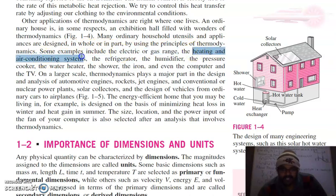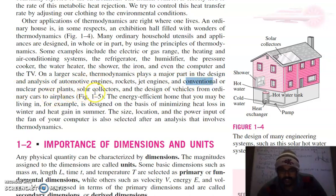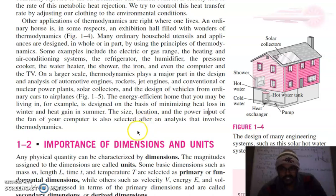Household examples include electric or gas ranges, heating and air conditioning systems, refrigerators, humidifiers, pressure cookers, water heaters, showers, irons, and even computers and TVs. On a larger scale, thermodynamics plays a major part in the design and analysis of automotive engines, rockets, jet engines, and conventional or nuclear power plants. Energy-efficient homes are designed on the basis of minimizing heat loss in winter and minimizing heat gain in summer. Even the size, location, and power input of the cooling fan in your computer is selected after analysis that involves thermodynamics.